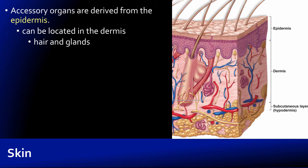We also need to talk about accessory organs of the skin, which are derived from the epidermis — and this can be a little weird to think about. Accessory organs include hair, glands, and nails. Hair comes out from the epidermis but appears to grow from within the dermis because cells from the epidermis invaginate deep into the dermis, forming the hair follicle. So hair is derived from epidermal tissue. The same is true for glands: their ducts empty onto the epidermis, and the gland tissue is epidermal in nature. This makes sense because the dermis is connective tissue, and secretion is a property of epithelial tissue — which is what our epidermis is composed of.